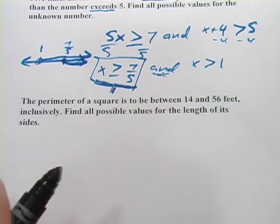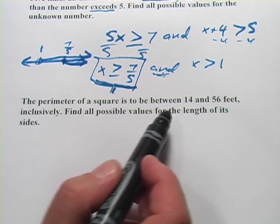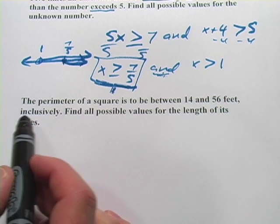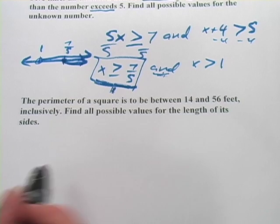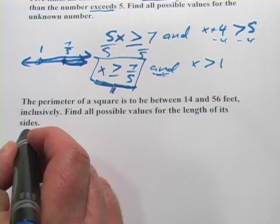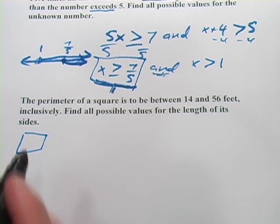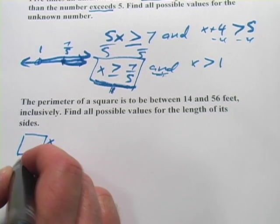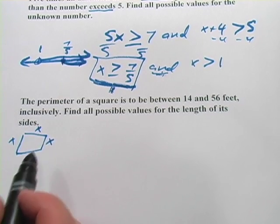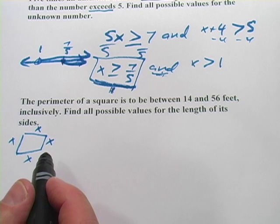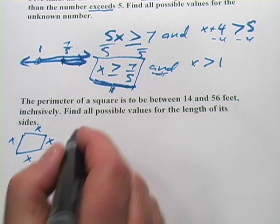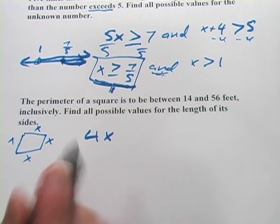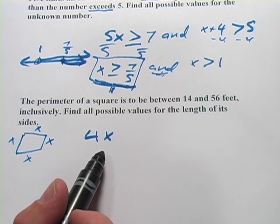This one says, the perimeter of a square is to be between 14 and 56 feet inclusively. Find all possible values for the length of its sides. Well, first you have to know the formula for perimeter of a square. The square has four sides that are all the same. And the perimeter, you add all those sides up. In this case, instead of calling it x plus x plus x plus x, we'll simplify that to 4x. So that's our formula for the perimeter of a square.